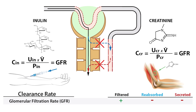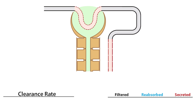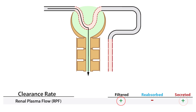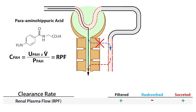In order to use clearance rate to assess renal plasma flow, the molecule must be completely cleared by the kidneys — that is, it must be freely filtered and secreted but not reabsorbed. Para-aminohippuric acid, or PAH, is routinely used to estimate renal plasma flow.